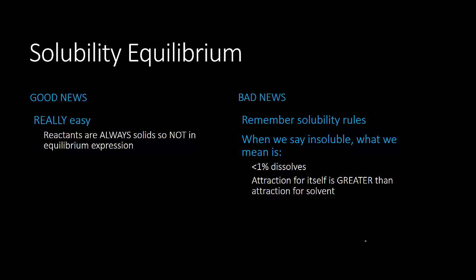When something is insoluble, the definition of insoluble means that less than 1% of that salt dissolves. For example, silver chloride is insoluble. Halides are insoluble when paired with silver, mercury, or lead. So silver chloride is insoluble — it's a solid that precipitates out of solution.